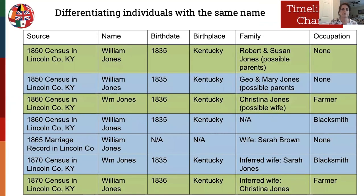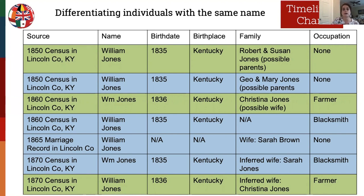That same chart is color coded so you can see the details sorted a little bit more clearly. You can read this example in the syllabus. This chart can be a tool that will help you get prepared for writing, but it could also be included in the report itself if it's nice and concise.